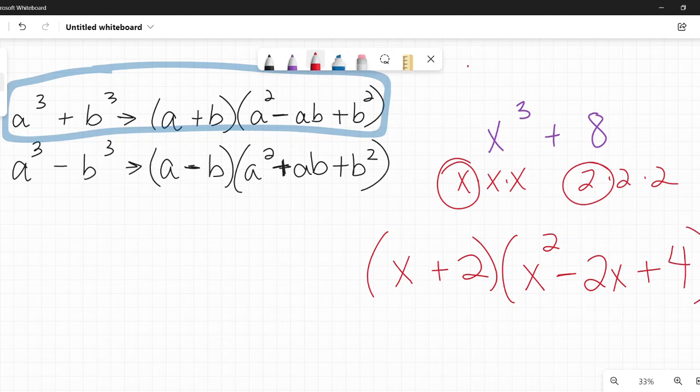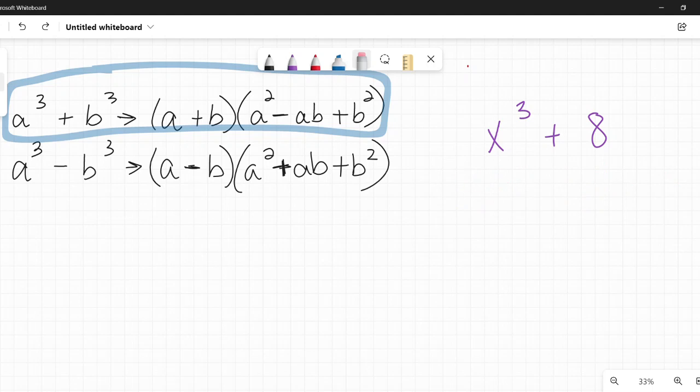Double check here though, always, just in case. It's unlikely, but it can happen. Double check to make sure that neither of these can be factored any further. Make sure that you can't pull out a greatest common factor out of here. And make sure that this can't be factored. Usually this is as far as it goes. But, you know, math tests love trying to trick you. They may throw in something where you have to keep factoring.